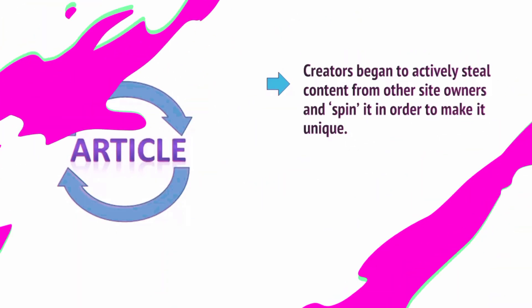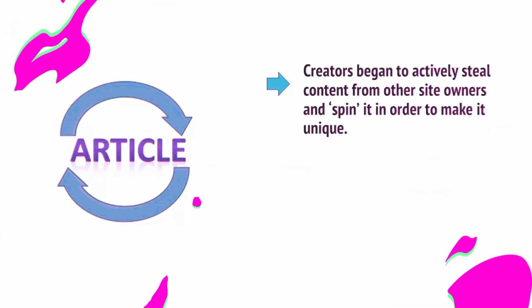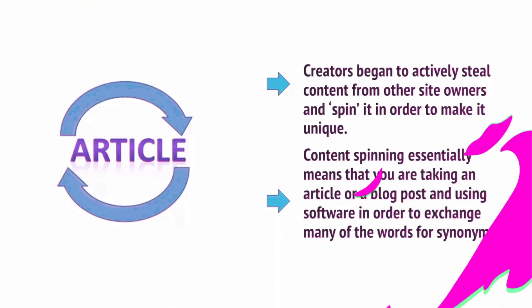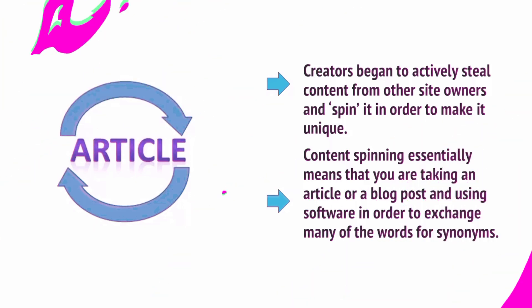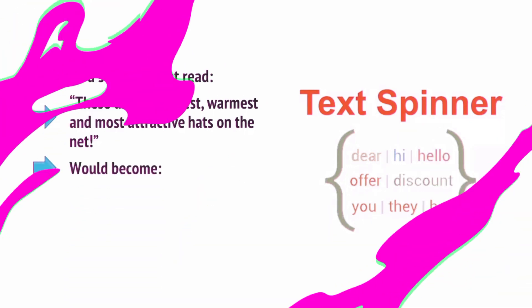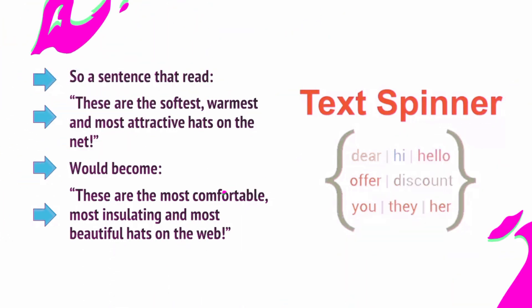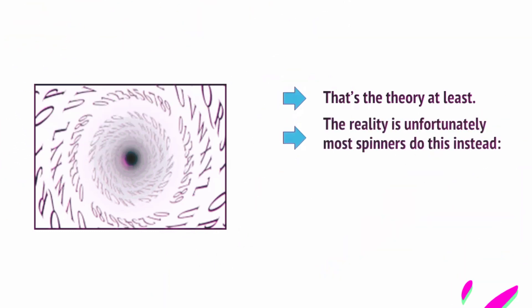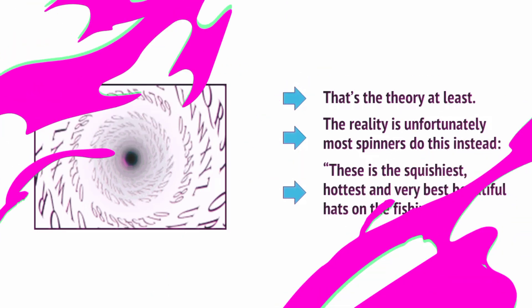And then it got worse still. Creators began to actively steal content from other site owners and spin it in order to make it unique. Google won't rank duplicate content, so content spinning, as it came to be called, essentially means taking an article or blog post and using software to exchange many of the words for synonyms. So a sentence that read 'these are the softest, warmest and most attractive hats on the net' would become 'these are the most comfortable, most insulating and most beautiful hats on the web.' Because the site owner didn't have to write that content themselves, they could publish thousands of posts in a short space of time and bomb Google. That's the theory at least. The reality is that most spinners produce gibberish instead — something like 'these is the squitty-ish, hottest and very best beautiful hats on the fishing net.'